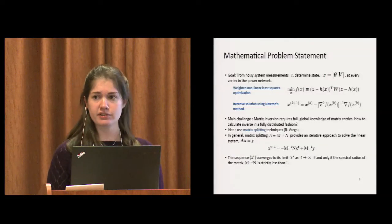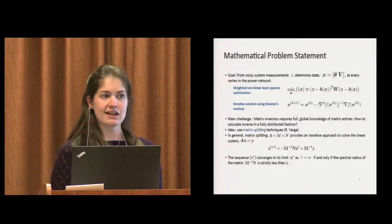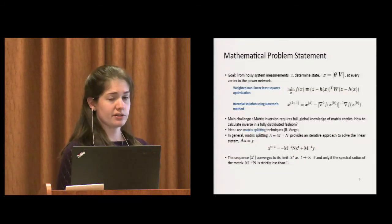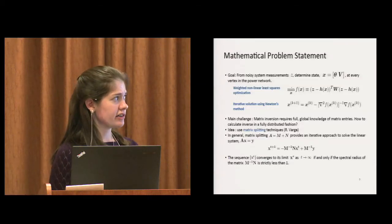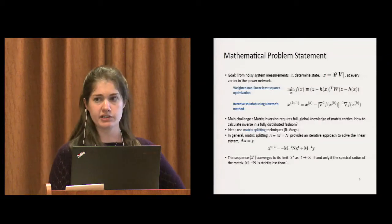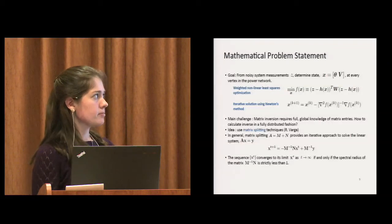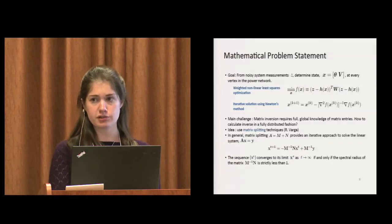We can solve this iteratively using Newton's method. Newton's method is advantageous with respect to convergence rate. It's a second order method, but it requires inverting the Hessian of the objective function grad squared f at every iteration. The problem we're trying to solve is how to do this inversion in a fully distributed way.